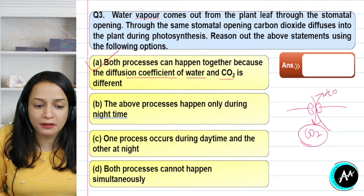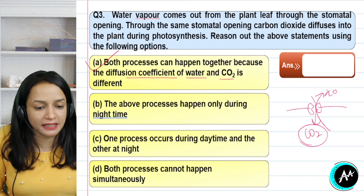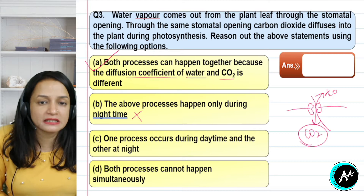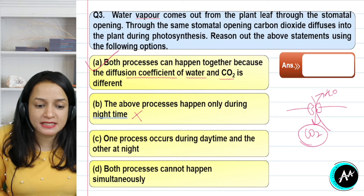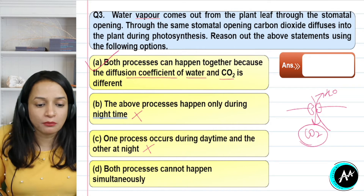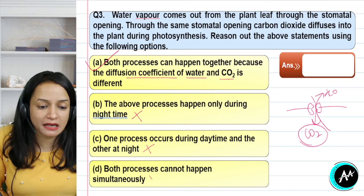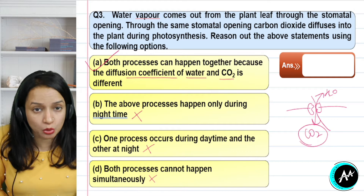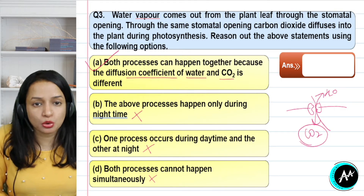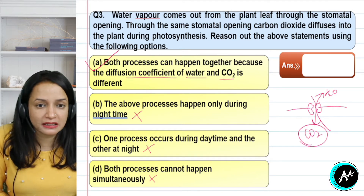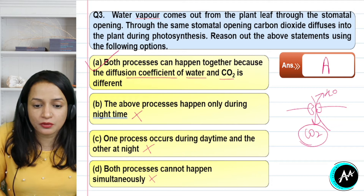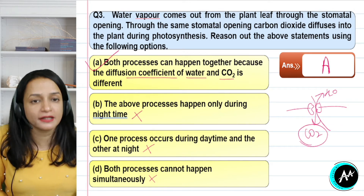Option B says the above processes happen only during night time — that is wrong; they mostly occur during the day. Option C says one occurs during the day and the other at night — that is also not possible. Option D says both processes cannot happen simultaneously — that is also wrong. Both can diffuse simultaneously because their diffusion coefficients are different, so there is no problem. The correct answer for question 3 is option A.